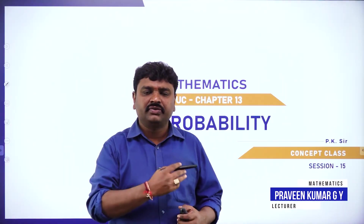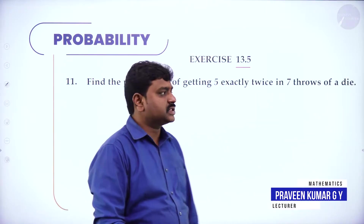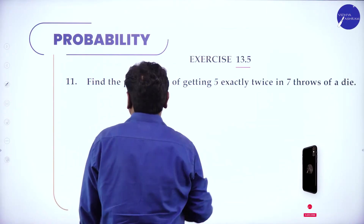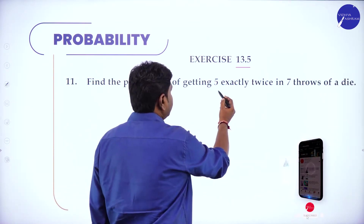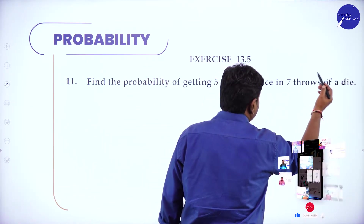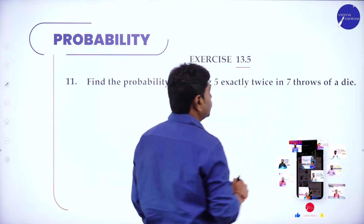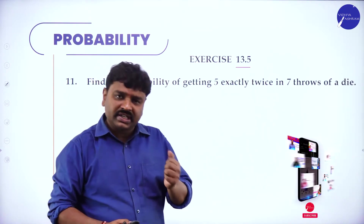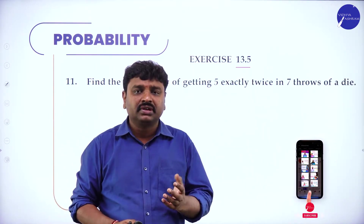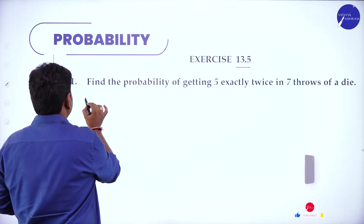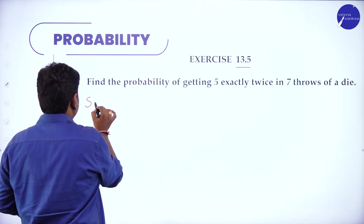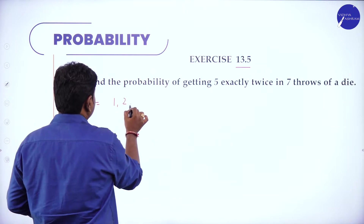Welcome to the session, dear students. Today we will go ahead with the problems of probability, Exercise 13.5. Find the probability of getting 5 exactly twice in 7 throws of a die. They are throwing the die 7 times and getting 5 exactly twice is the question.